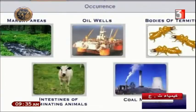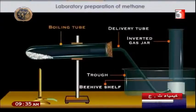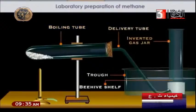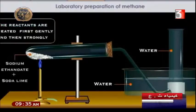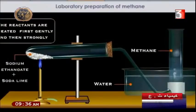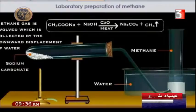Methane is found in different places: in oil wells, in the bodies of insects, from burning coal in mines, and from the remains of animals. To prepare methane in the laboratory, you need a boiling tube, a delivery tube, and an inverted jar filled with water. You add sodium ethanoate (CH3COONa) with soda lime in the boiling tube and heat them.